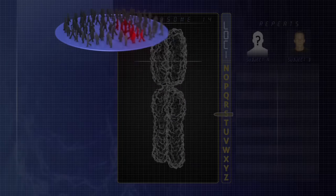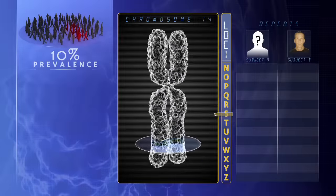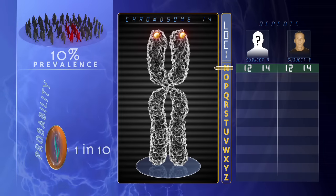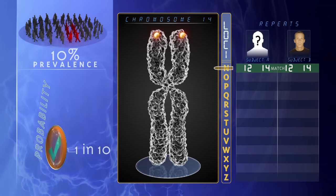If 10% of people have the same number of repeats at a given STR, for example, finding a match at that site is merely suggestive that two samples are a match.